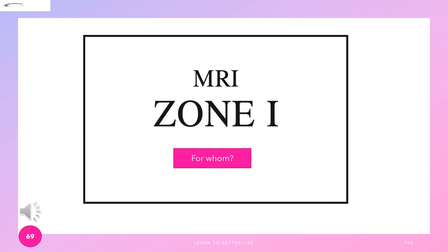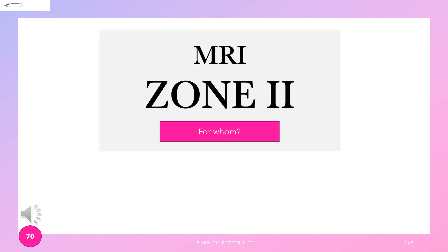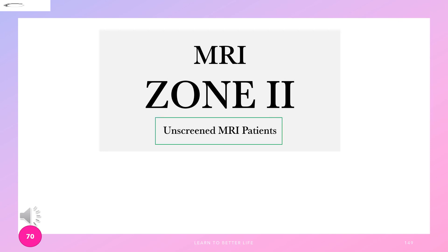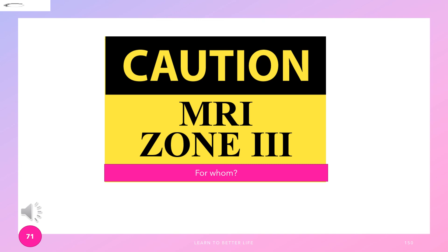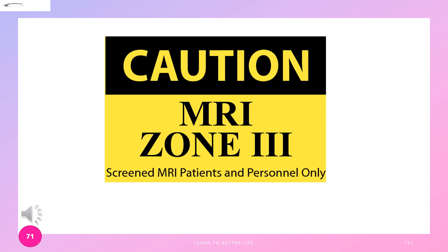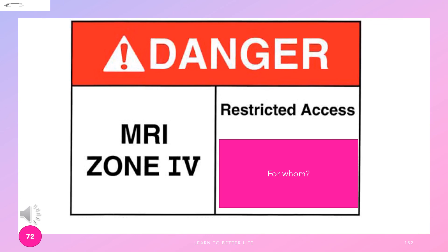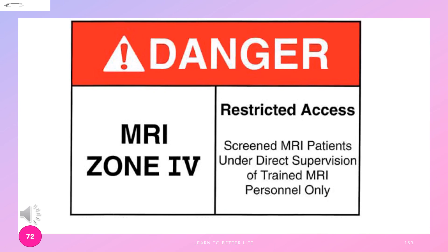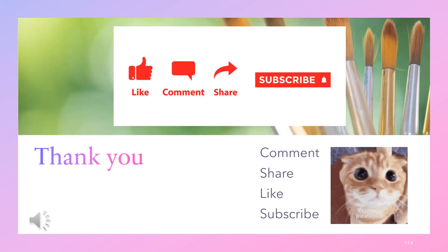MRI Zone 1 is for the general public. Zone 2 is for MRI unscreened patients. Zone 3 is for screened MRI patients and personnel only. Zone 4 is a restricted danger area for screened MRI patients under direct supervision of trained MRI personnel only.